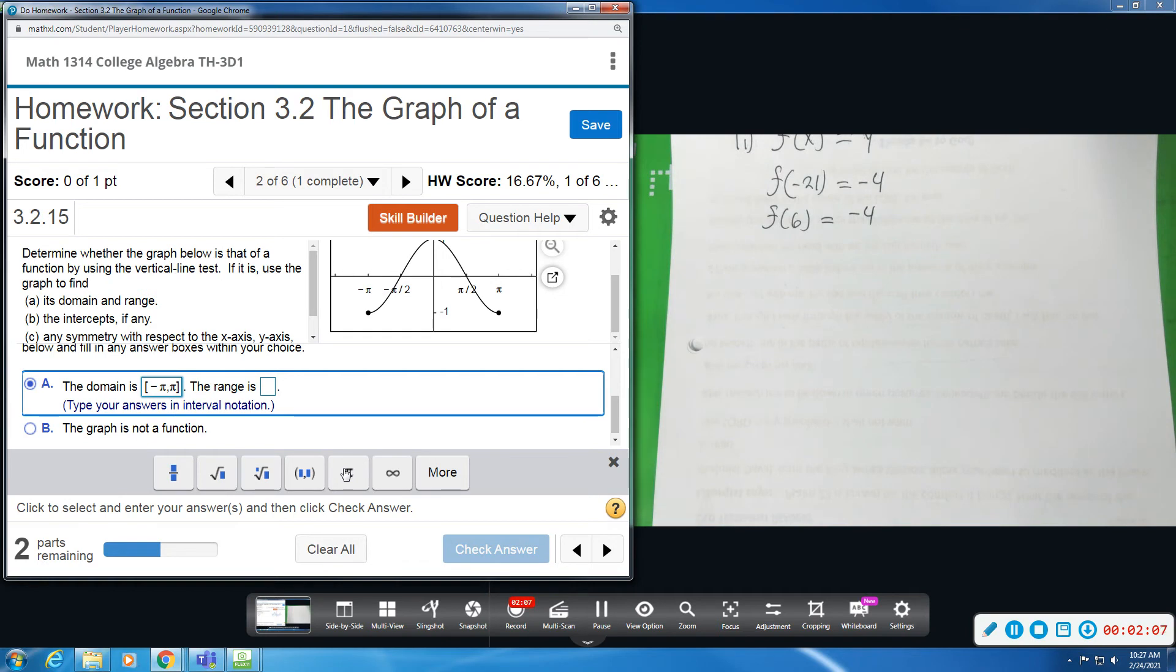Now, our range, we look at this graph from bottom to top, lowest point to highest point. So lowest point appears to be negative 1, which is included because of a closed circle or solid line, and it goes all the way up to a maximum height of positive 1. So our range, also in brackets because those points are included, would be negative 1 to positive 1, closed bracket.